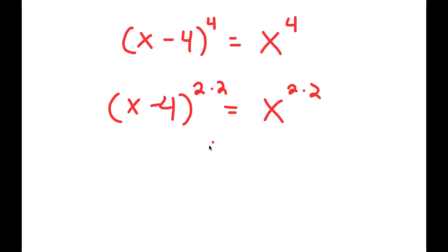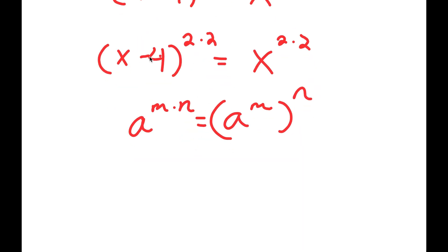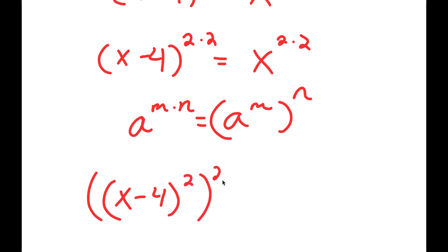Now, if I have something in the form a to the power of m times n, this is the same thing as a to the power of m to the power of n. So x minus 4 to the power of 2 times 2, I can rewrite that as x minus 4 to the power of 2 to the power of 2, which is equal to x to the power of 2 to the power of 2.